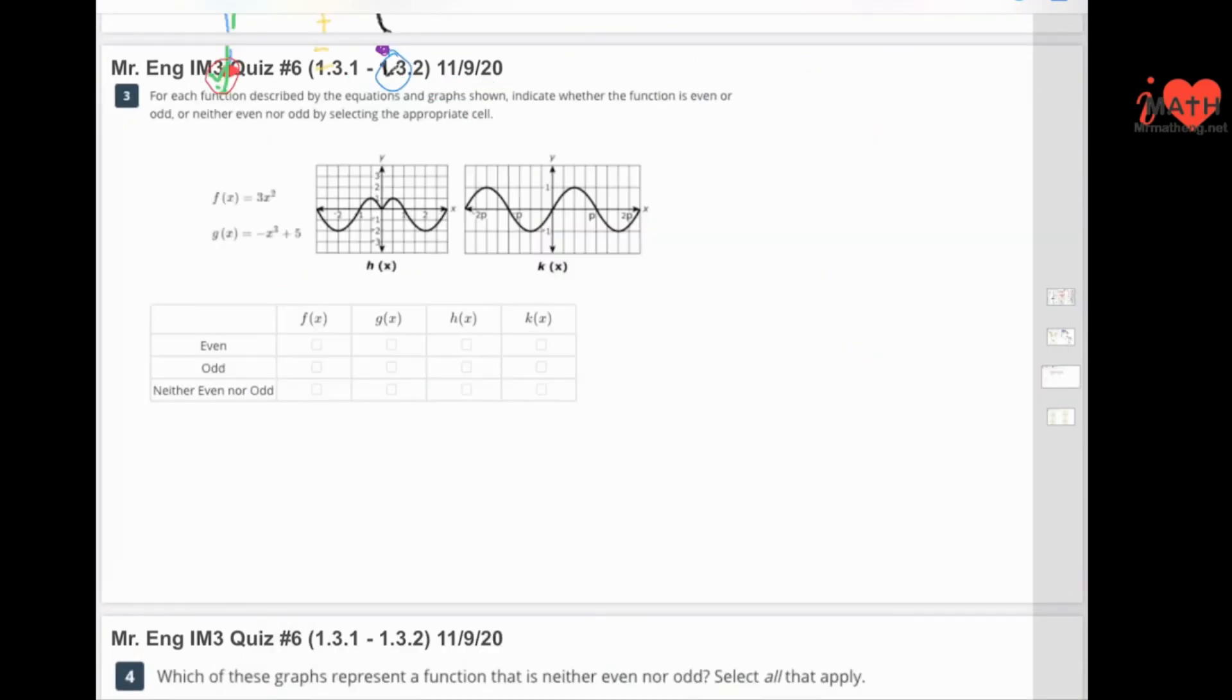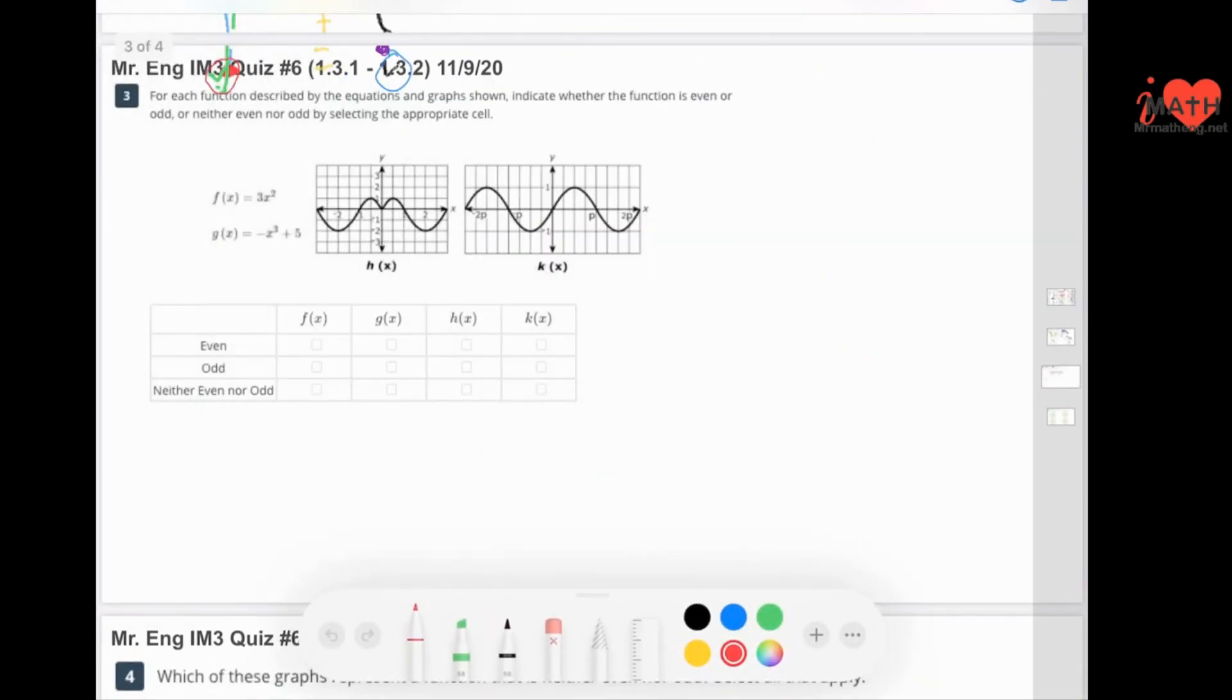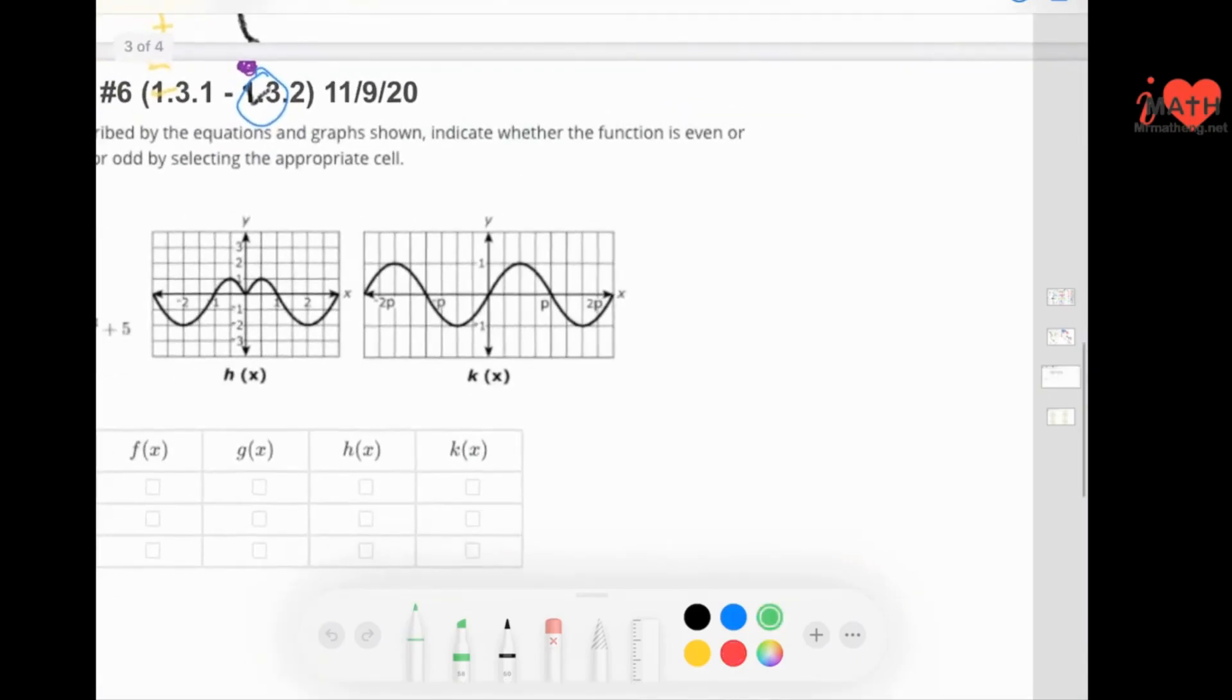So that's the first one. Let's go on to question number two. For each function described by the equations and graphs shown, indicate whether the function is even, odd, or neither, by selecting the appropriate cell. The first thing I just want to ask is, does it say the word degree? And if you are paying attention, the answer is no. Why is that a big deal? This problem is referring to symmetry.